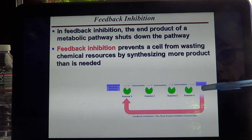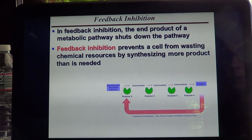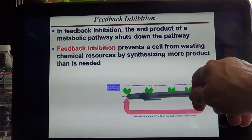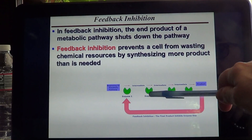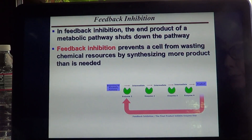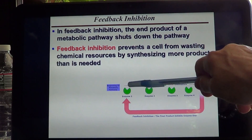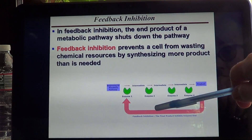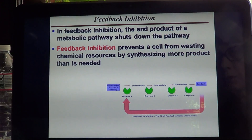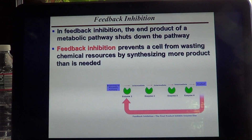In many cases, products that are generated — now hanging around with nothing to do — are going to bind to enzyme number one, because without number one, none of this chain reaction is possible. So it's going to bind to enzyme number one allosterically and stop the entire chain of events. This is called feedback inhibition, when a product acts on the enzyme as an allosteric inhibitor.